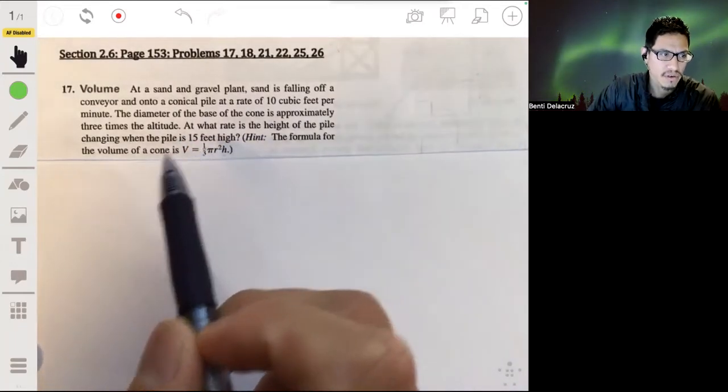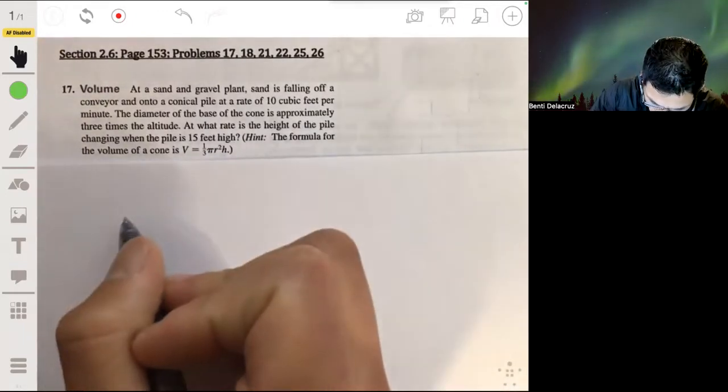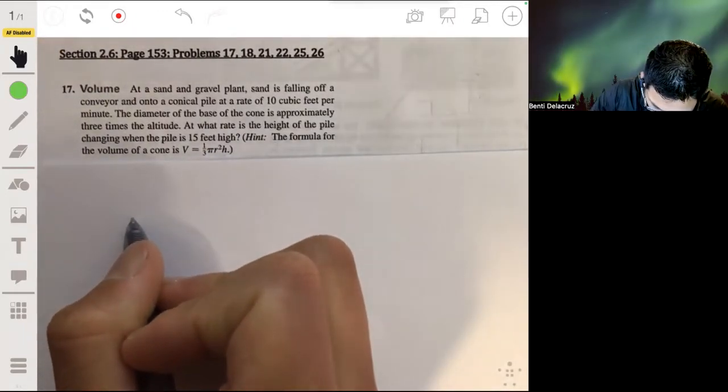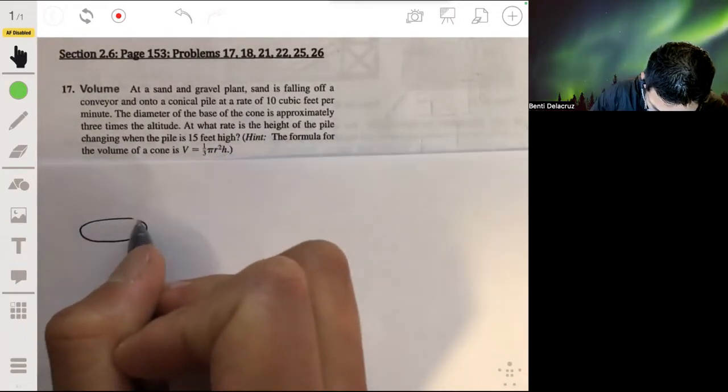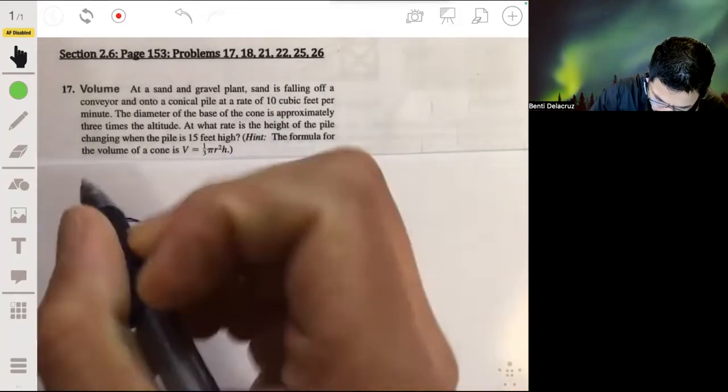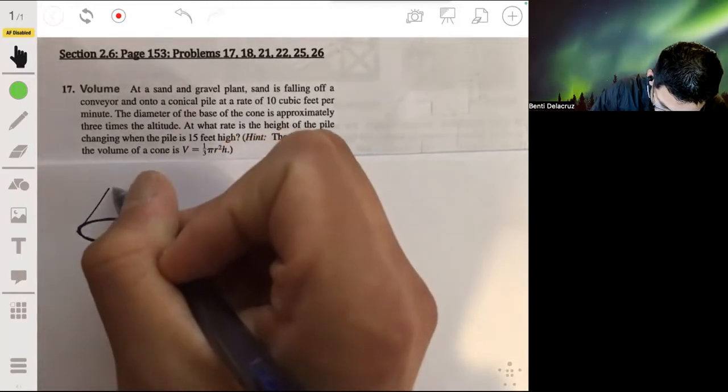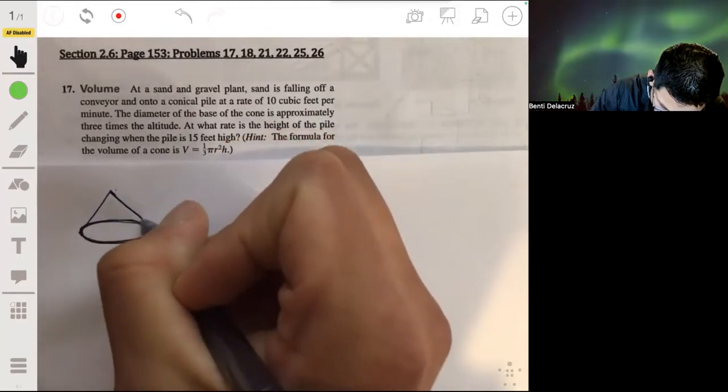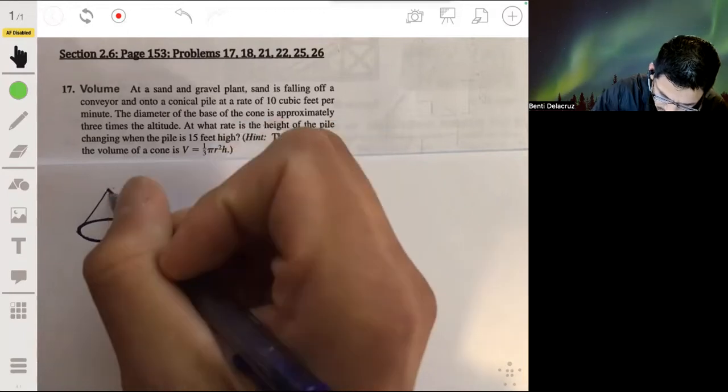Here's the formula for the volume of the cone. Let's start off by drawing just a sketch of what this may look like. So the cone, the base is supposed to be three times as wide as the height.